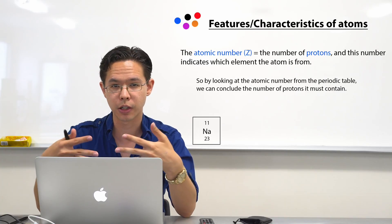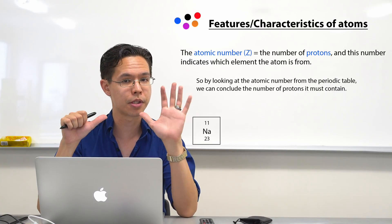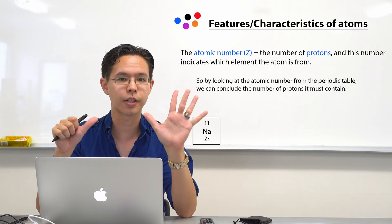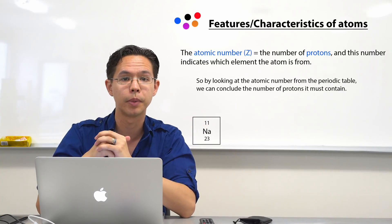If we're looking at another element such as carbon, carbon has atomic number 6, that tells us we have 6 protons in the nucleus of a carbon atom.